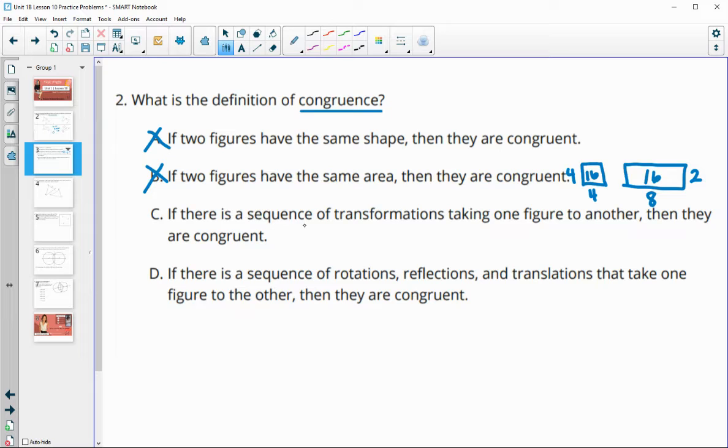Option C says if there's a sequence of transformations that takes one figure to another, then they are congruent. This is close to our definition that we learned. It's just missing an important word here. Not just transformations, but it needs to be rigid transformations.